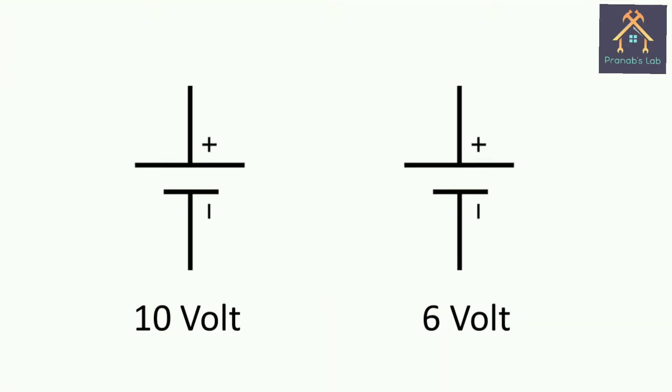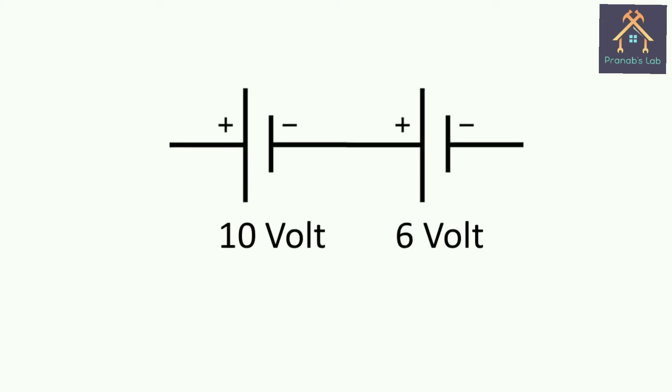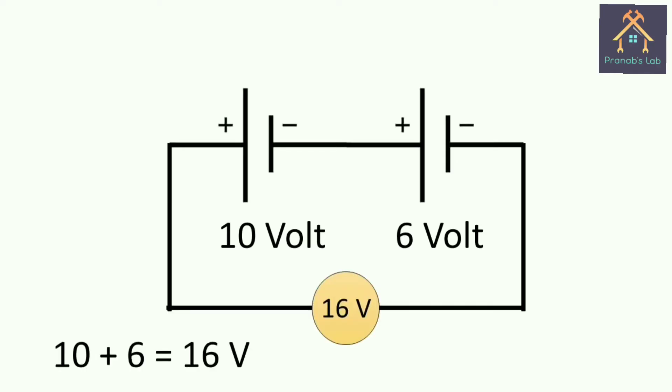Assume there are two DC voltage sources of 10V and 6V respectively. And we know that polarity of a DC source is always constant. Now if these two sources are connected in series as shown in figure, then the total voltage will be 16V. This connection may be called additive polarity.